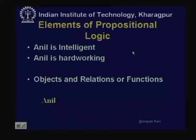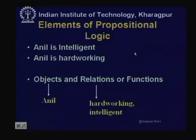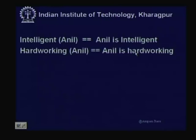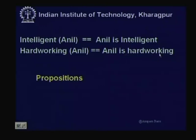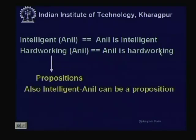A proposition is constituted of objects and relations or functions. For example, 'intelligent(Anil)' means Anil is intelligent, and this entire statement can be true if the Anil being talked about is indeed intelligent. 'Hardworking(Anil)' similarly means Anil is hardworking. Propositions can be written either as 'Anil is intelligent' or 'intelligent(Anil),' depending on the syntax the language allows. A proposition can be true or false.